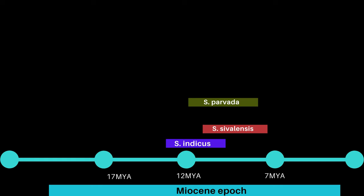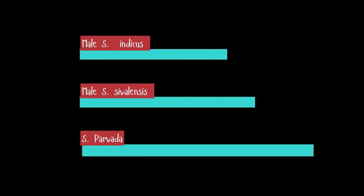The three known species of Shivapithecus lived between approximately 12.5 to 8.5 million years ago, with Shivapithecus indicus being the oldest and smallest, Shivapithecus sivalensis the youngest, and Shivapithecus parvata in between. Interestingly, Shivapithecus parvata is the largest of the species.